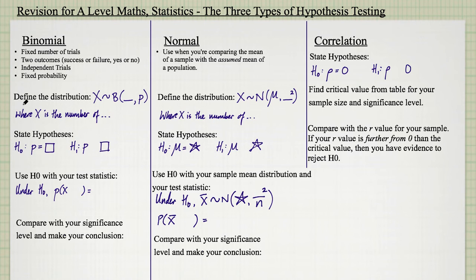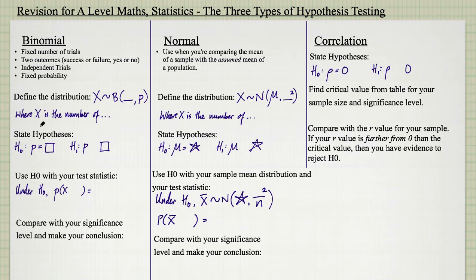Often in the question the distribution will already have been defined for you. So it will already say that X is the number of, say, bulbs that produce yellow flowers. It is this phrase — X is the number of something. X is not the probability of something. A lot of people write that the variable is the probability of something — it's not. It's always the number of things. Everything written on the screen so far is what needs to be written every single time.